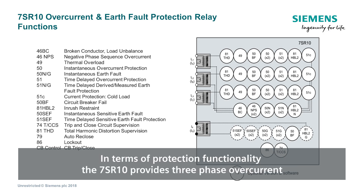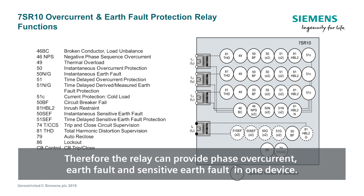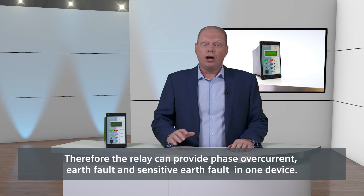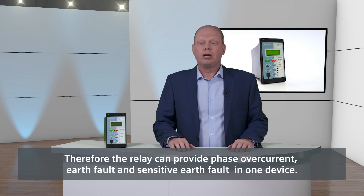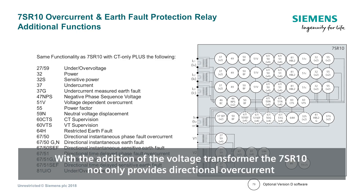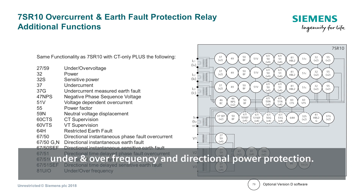In terms of protection functionality, the 7SR10 provides three phase overcurrent and both measured and calculated earth fault. Therefore the relay can provide phase overcurrent, earth fault, and sensitive earth fault in one device. With the addition of voltage transformers, the 7SR10 not only provides directional overcurrent and earth fault but a number of additional functions, including under and over voltage, under and over frequency, and directional power protection.